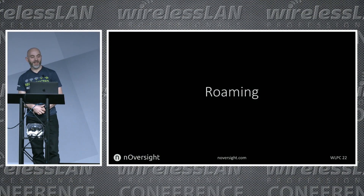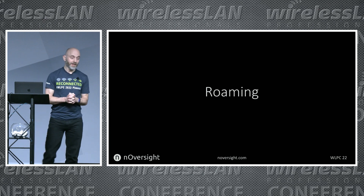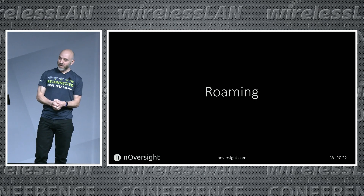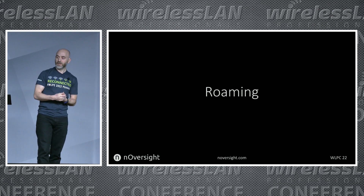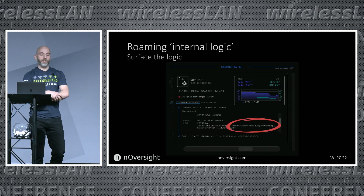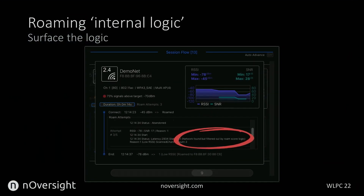The topic of discussion was roaming — that's what you voted to hear about. There's a ton of information in these logs; I'm only bringing out a fraction of it, my roadmap is pages long. Roaming plagues us — it impacts voice, it impacts video, and video has become critically important. Within nOversight, for each session — each time you change BSSID — we develop a session. In the circle here: 'network found but filtered out by roam score logic.' You've designed the gold network, walked to the edge of range, but the device filtered that candidate. Is that useful? I think so.